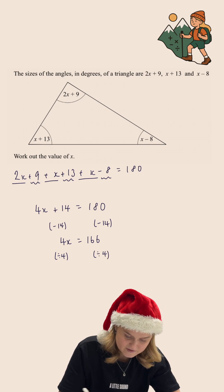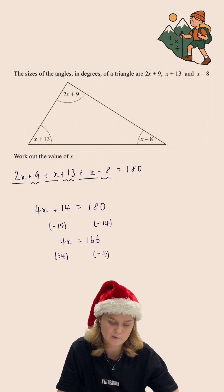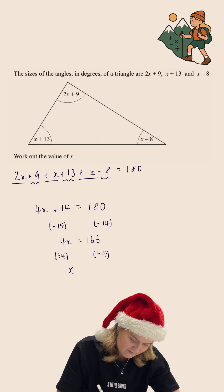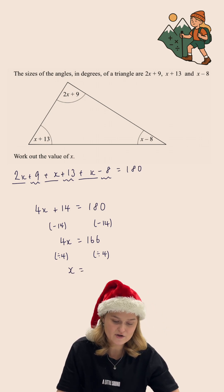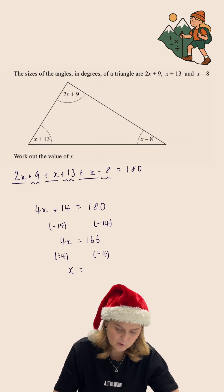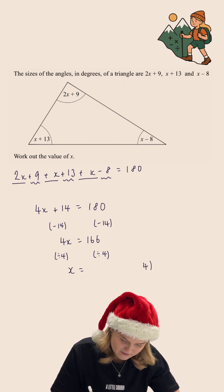And so I am going to divide both sides of this equation by 4. On the left we will have x and on the right hand side we need to do 166 divided by 4. So I'm going to use my bus stop method to do that.